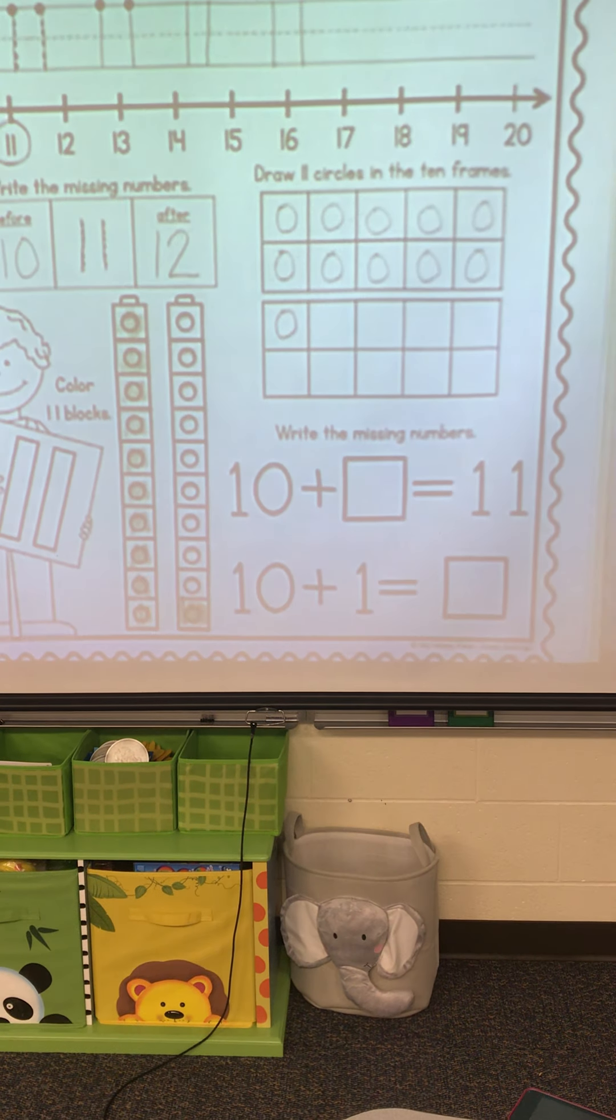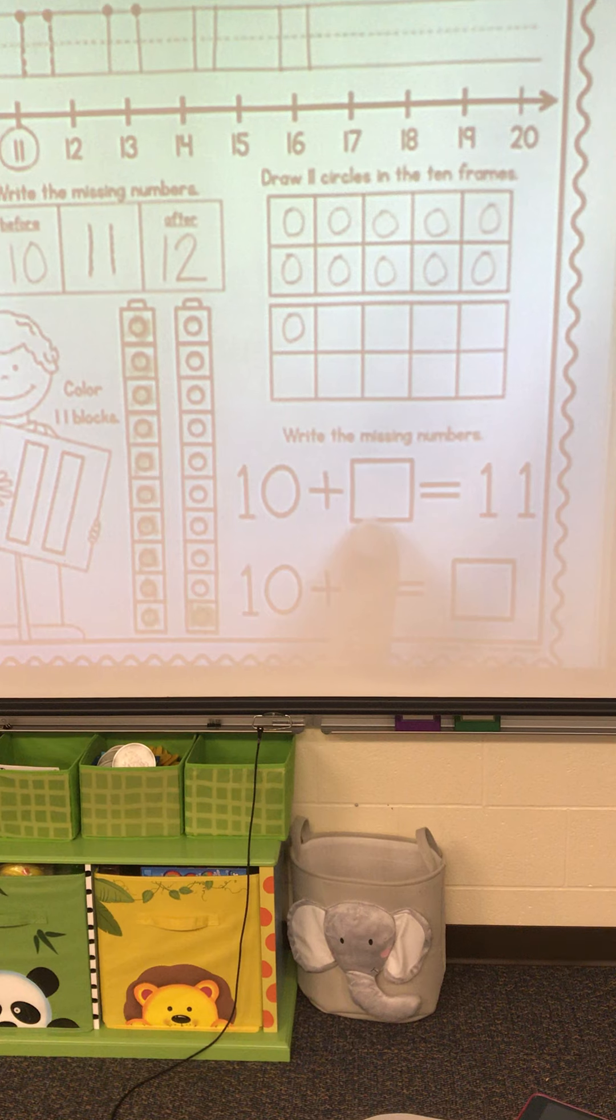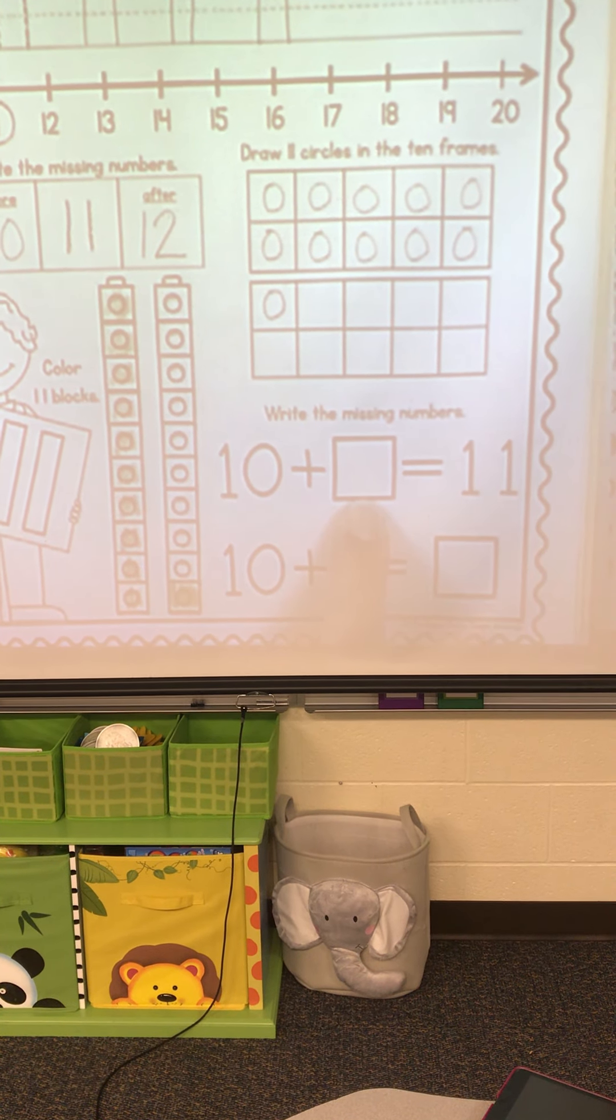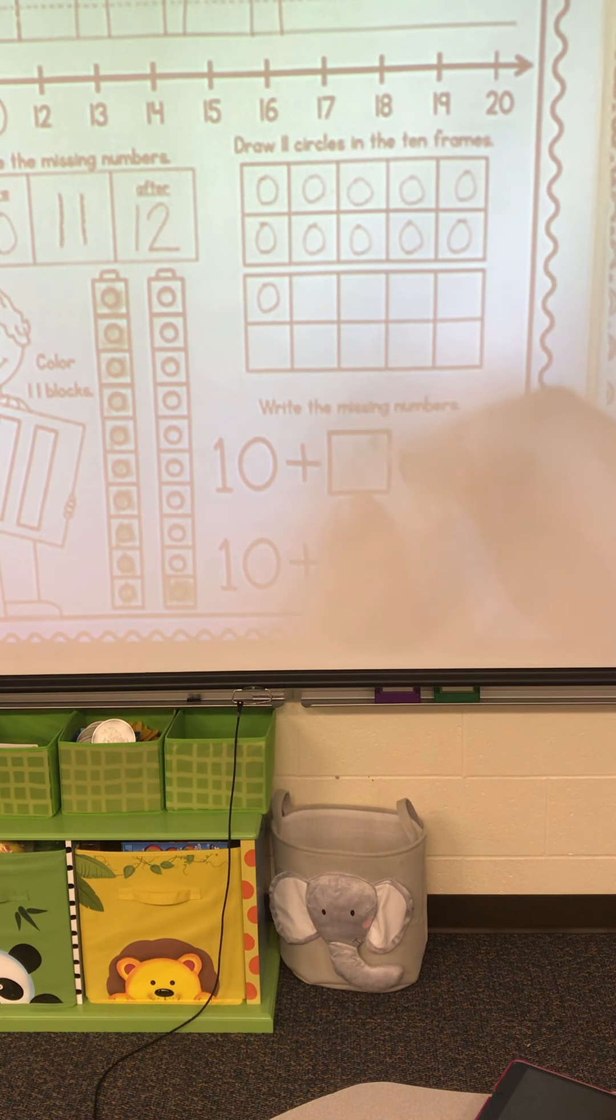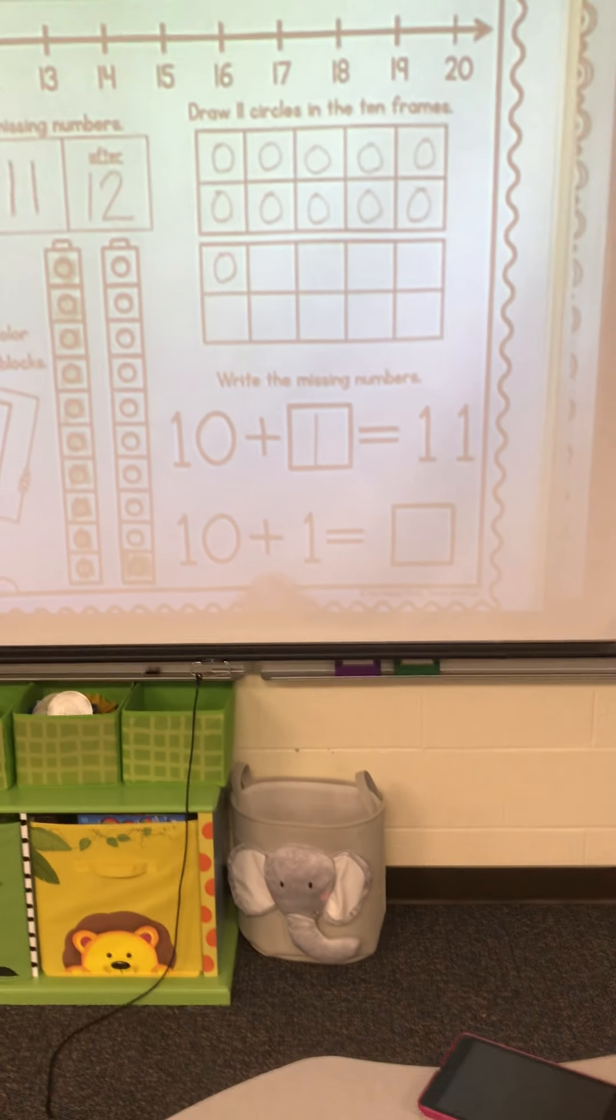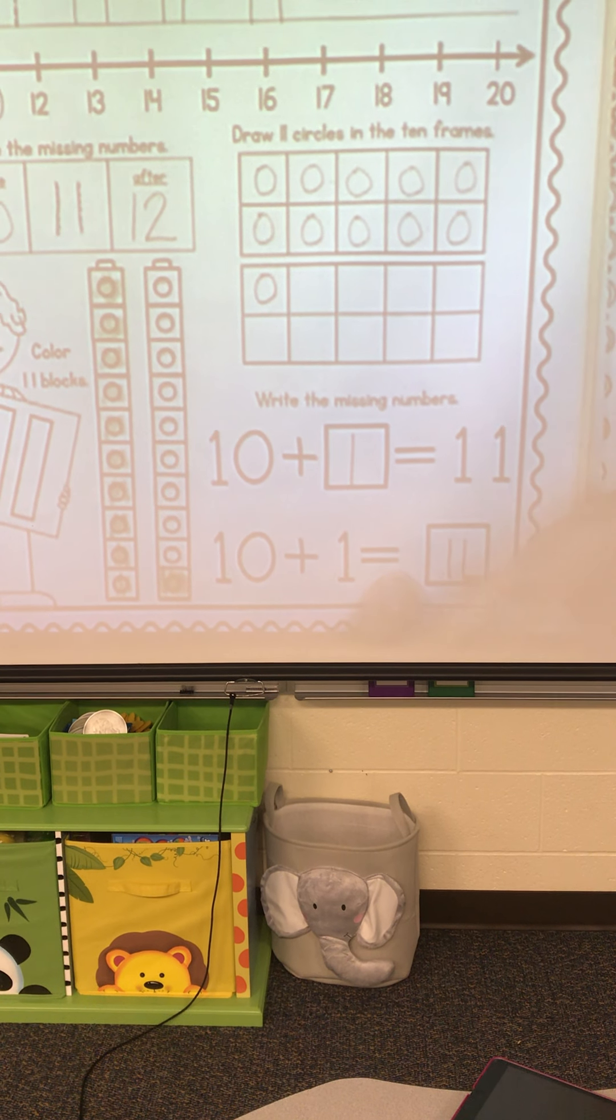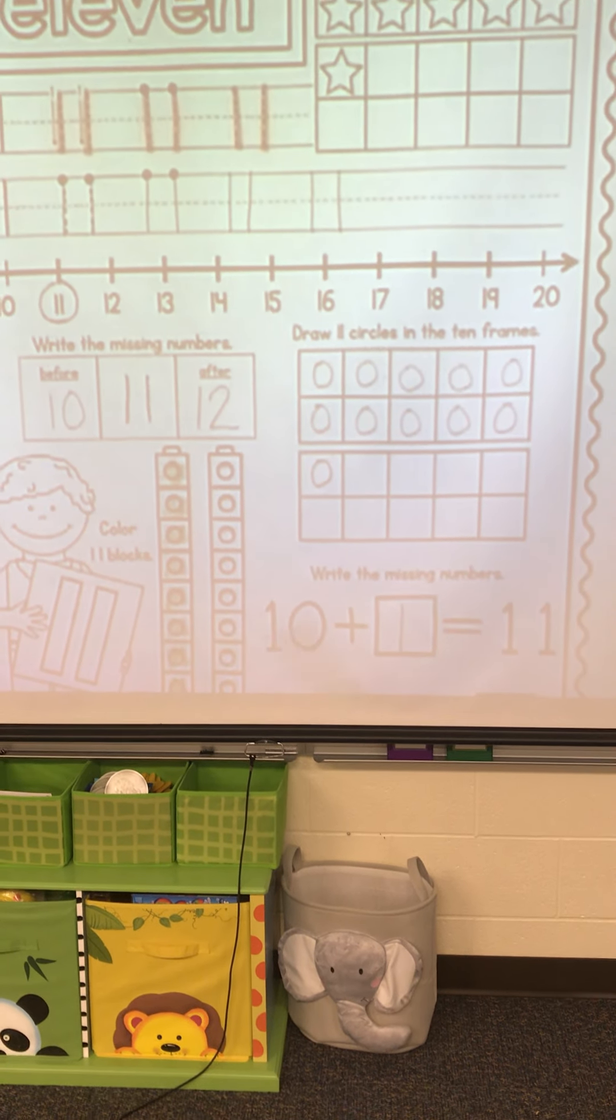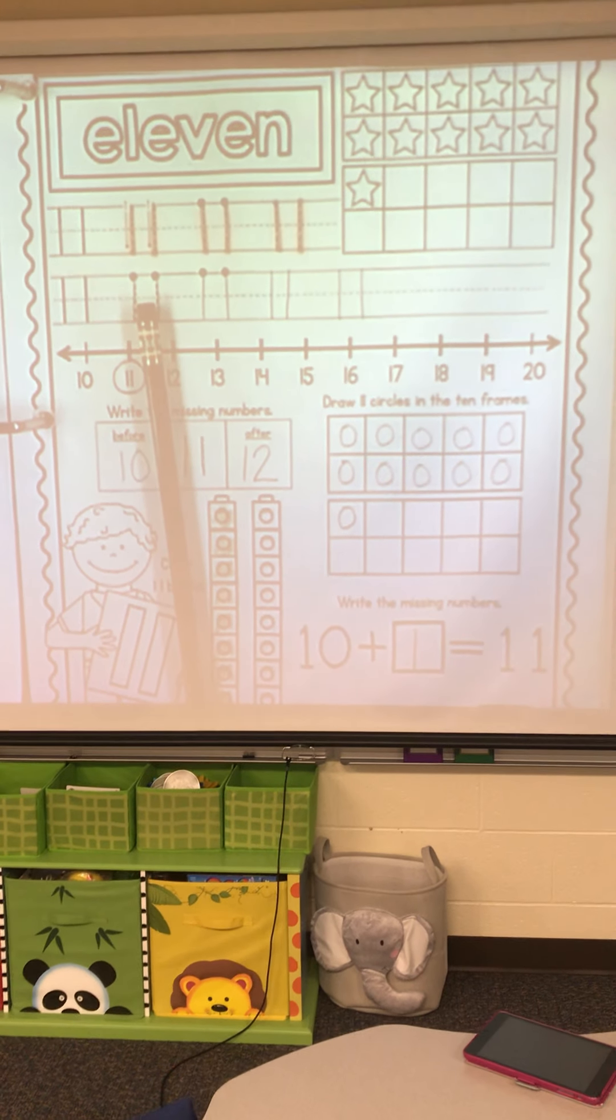We have to write the missing numbers. 10 plus how many more equals 11? There's 10, there's 10, there's 10. Plus how many more equals 11? 1. So we know 10 plus 1 equals 11. All right. What was our number? 11, 11, 11, a 1, a 1, and done.